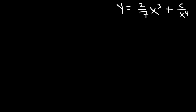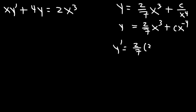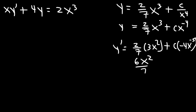Now let's check our answer by plugging it back into the original equation. First, let's find y prime. Rewriting y as 2 over 7 x cubed plus c x to the negative fourth, the derivative is 2 over 7 times 3x squared plus c times negative 4x to the negative 5, which simplifies to 6x squared over 7 minus 4c divided by x to the fifth.